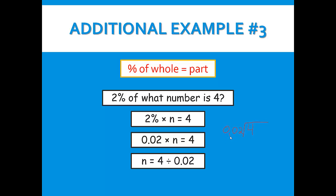We'll move our decimal two places — 1, 2 — to make 0.02 a whole number of 2, and do the same for 4 — 1, 2. Now we divide. 2 goes into 4 two times, and 2 times 2 is 4. We subtract and get zero. We bring down our zero, and 2 goes into 0 zero times. 0 times 2 is 0. We subtract and get zero. We bring down another zero; 2 goes into 0 zero times again. We subtract and get zero with nothing left. So our answer is 200 — n equals 200.